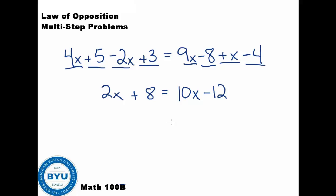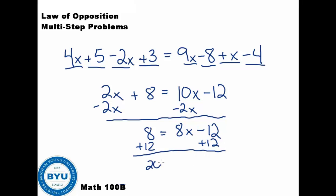Now that we've simplified the problem, we can go ahead and get the x's all to one side. I'm going to go ahead and subtract these 2x over. In doing that I'm left with 8 equals 10x minus 2x is 8x minus 12. Then we could go ahead and add 12 to both sides. Adding 12 to both sides gets us 20 equals 8x.